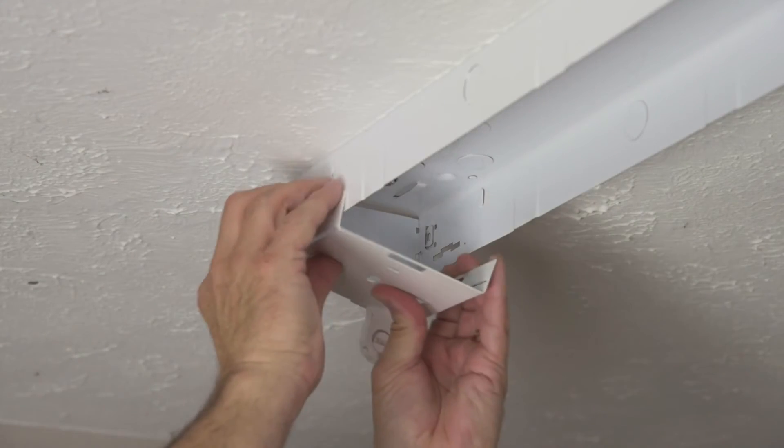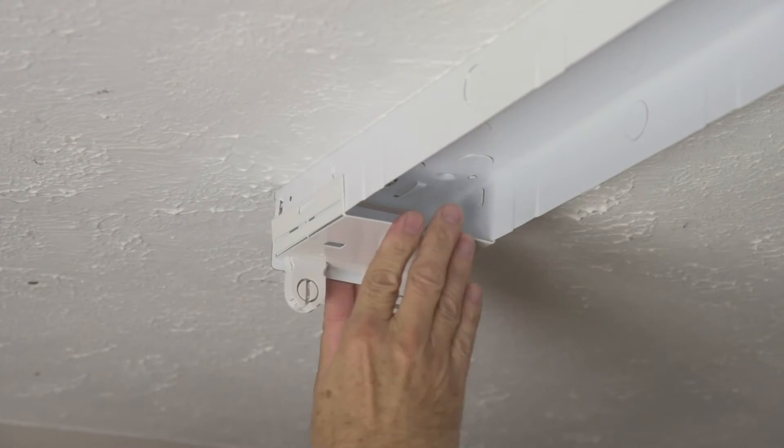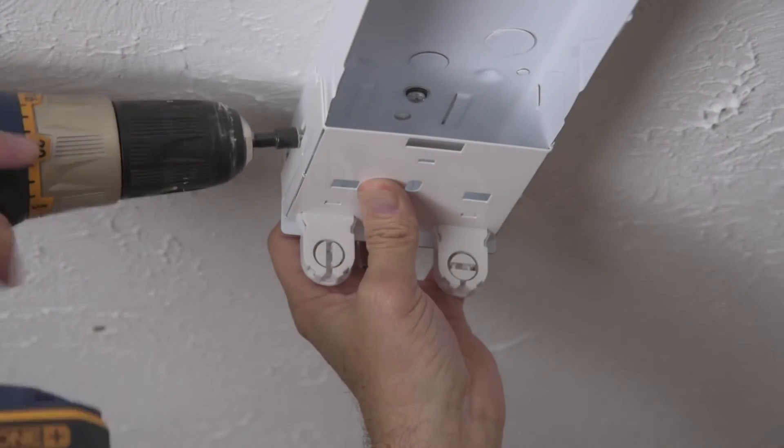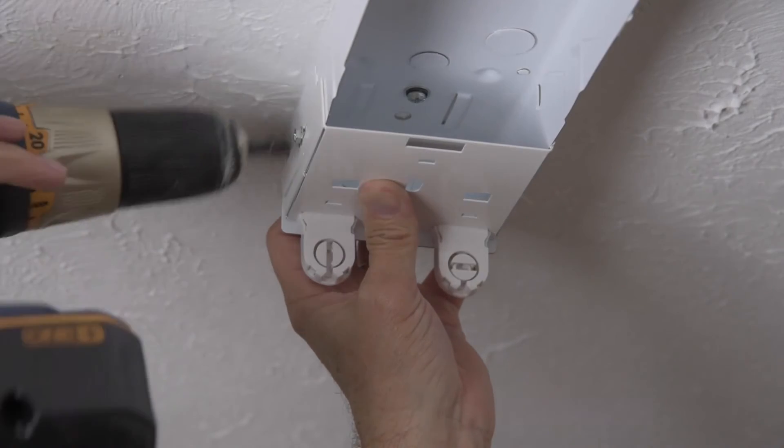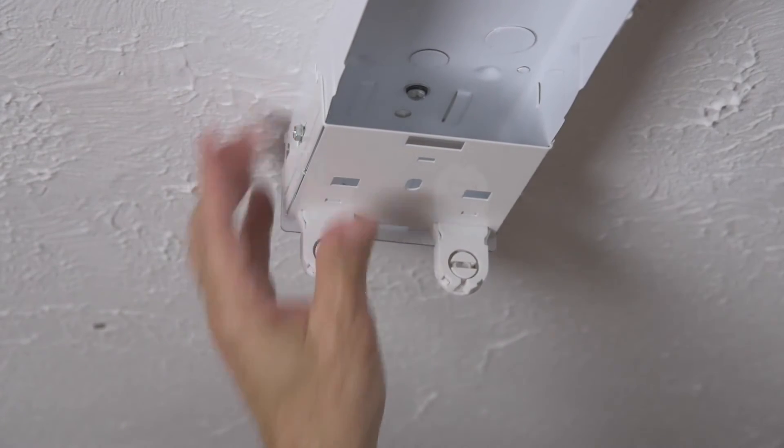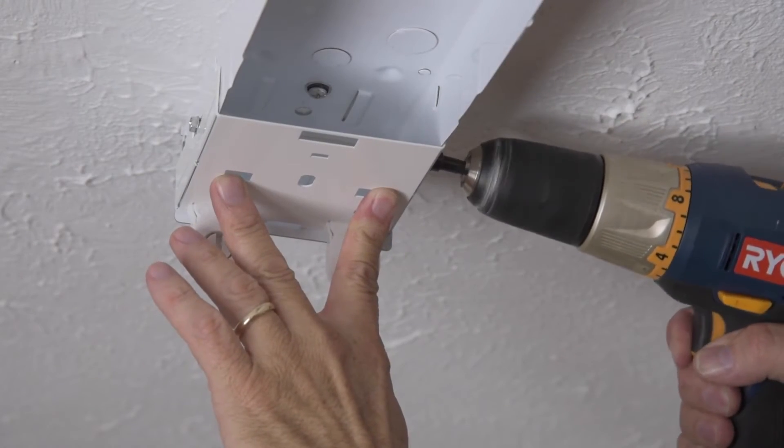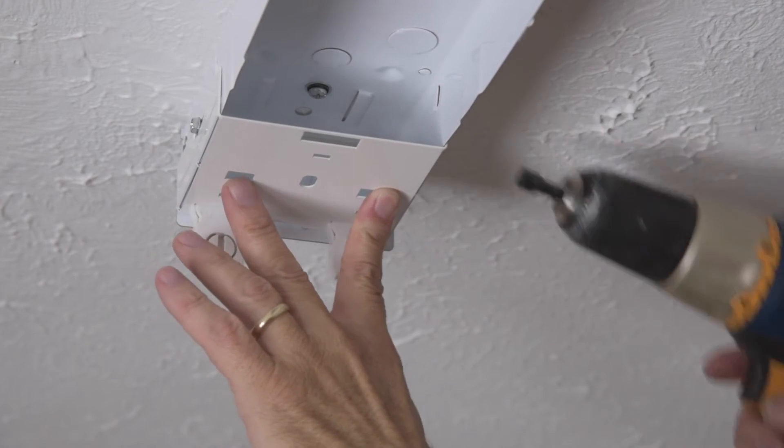Next, install the ends. Because power is required to just one end of the tubes, these are basically placeholders or dead ends. Use the included self-tapping screws to secure them to the fixture.